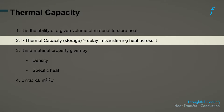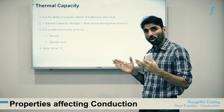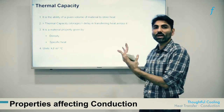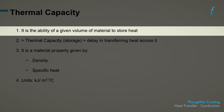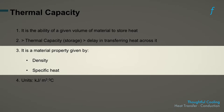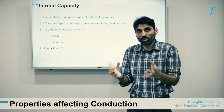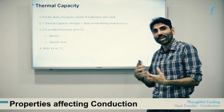Thermal capacity promotes the acceptance of heat to some degree. What it does is store the heat long enough — it is the property indicating the ability to store it for long enough to prevent heat from actually affecting the other side of the material. Therefore, it is the ability of a given volume of material to store heat, directly proportional to the density of the material and its specific heat. The higher the density, the more material available to absorb and delay the transfer of heat.